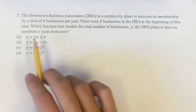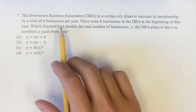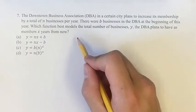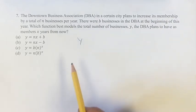There are b businesses in the beginning of the year, and we're asked which function best models the total number y, the number of businesses they plan to have x years from now.